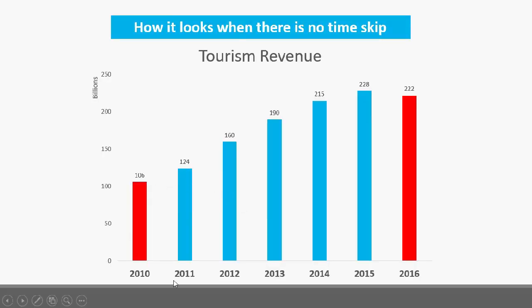So nirecreate ko ulit yung graph — same numbers pa rin. Pero sa graph na to, instead of i-skip yung 2011 to 2015 kagaya ng kabilang graph, sinama ko to sa data. Napapansin nyo ba na parang hindi na ganon ka-impressive yung 2016 revenue pag nakita nyo yung revenue growth from 2011 to 2015? And actually, kung mapapansin nyo, nag-decline pa nga yung revenue from 2015 to 2016.